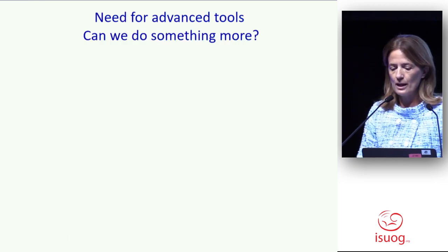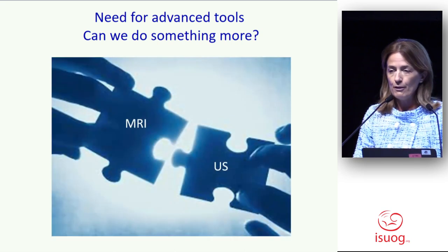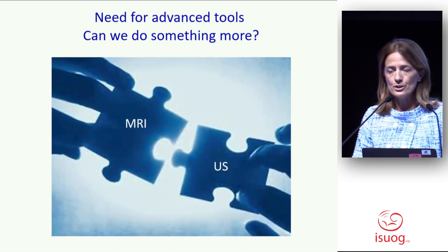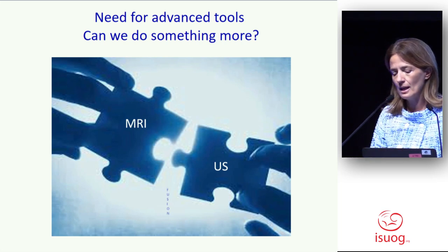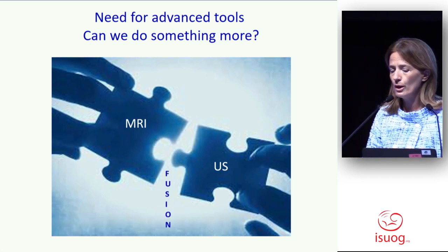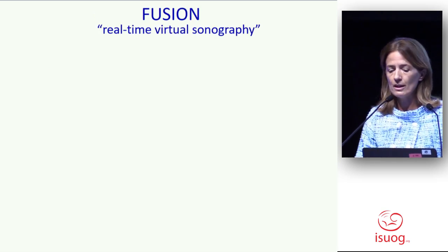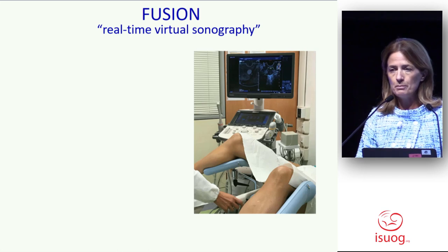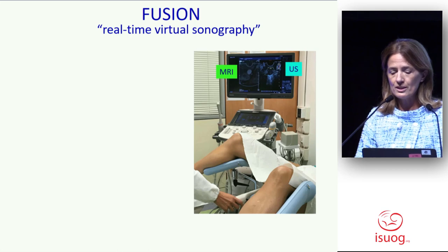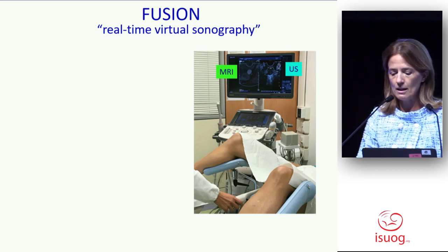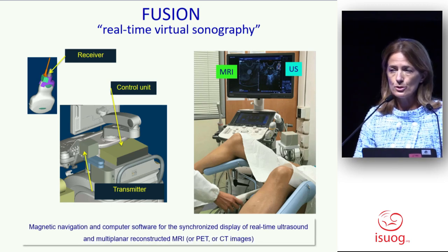Need for advanced tools — can we do something more? A few words to mention a very new advanced tool: the combination of magnetic resonance and ultrasound in so-called fusion imaging, or real-time virtual sonography. The equipment is very simple — you have your machine, you can see on your screen both magnetic resonance and ultrasound. You have a control unit, a transmitter, a receiver. Once you have uploaded the MRI, you synchronize the two examinations and you can navigate.